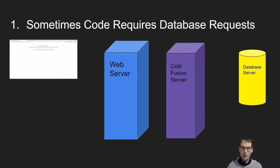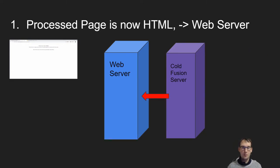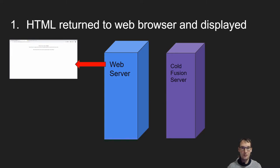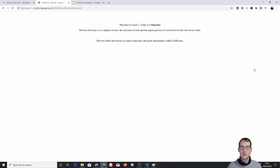Sometimes certain ColdFusion code can require a database, and it will then look up stuff in the database. So you have this kind of traffic — the ColdFusion server requests and asks for information from the database server so it can display things. For example, your Facebook friend list — all those names. The ColdFusion server requests information from the database server, the database server returns all your friends, and then it sends it back to the ColdFusion server, which builds HTML from your code. That HTML is then sent back to the web server, which returns it to the browser so you see the page.